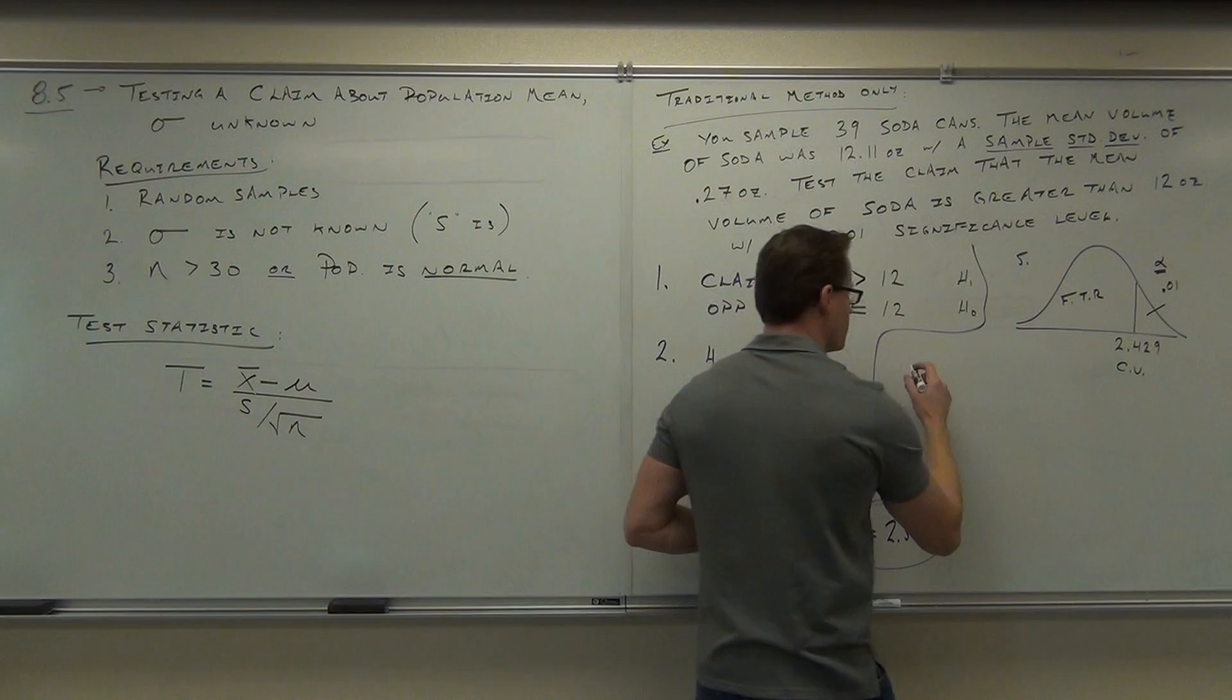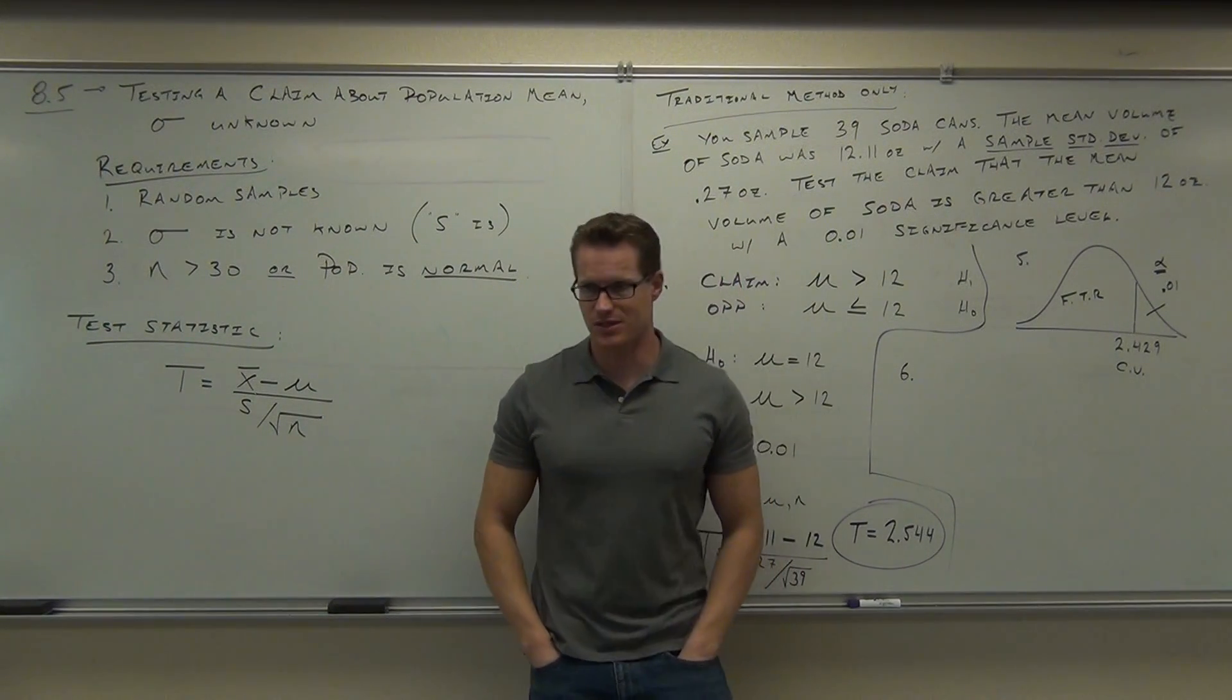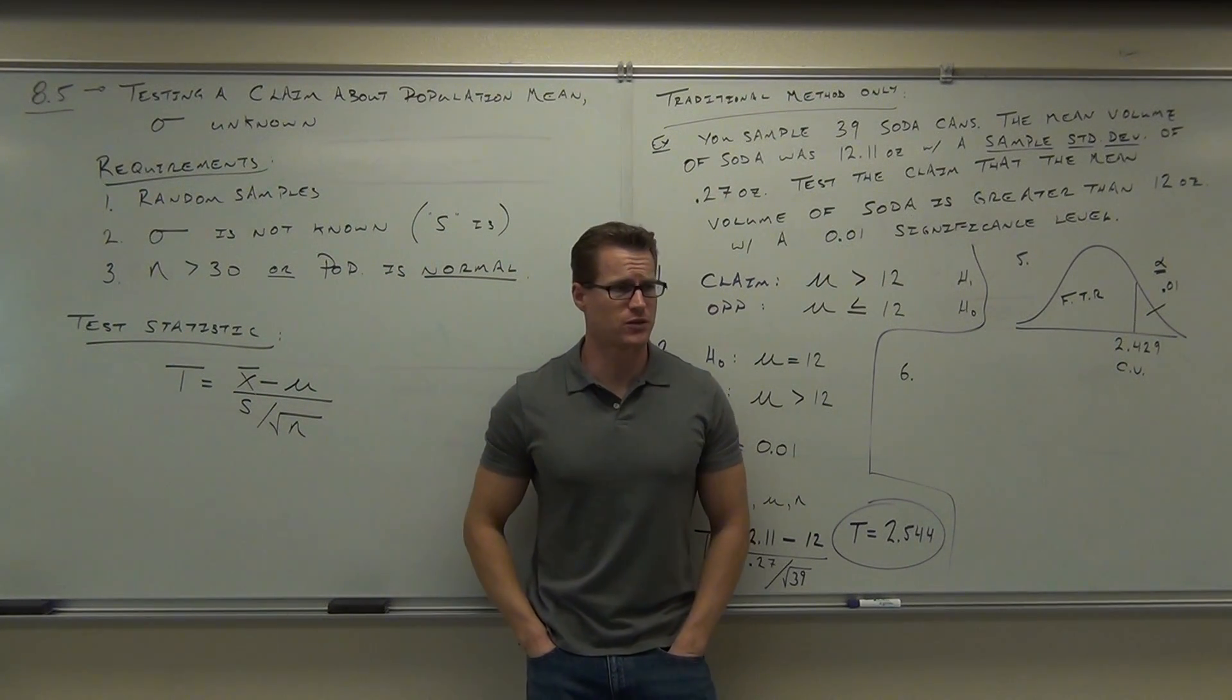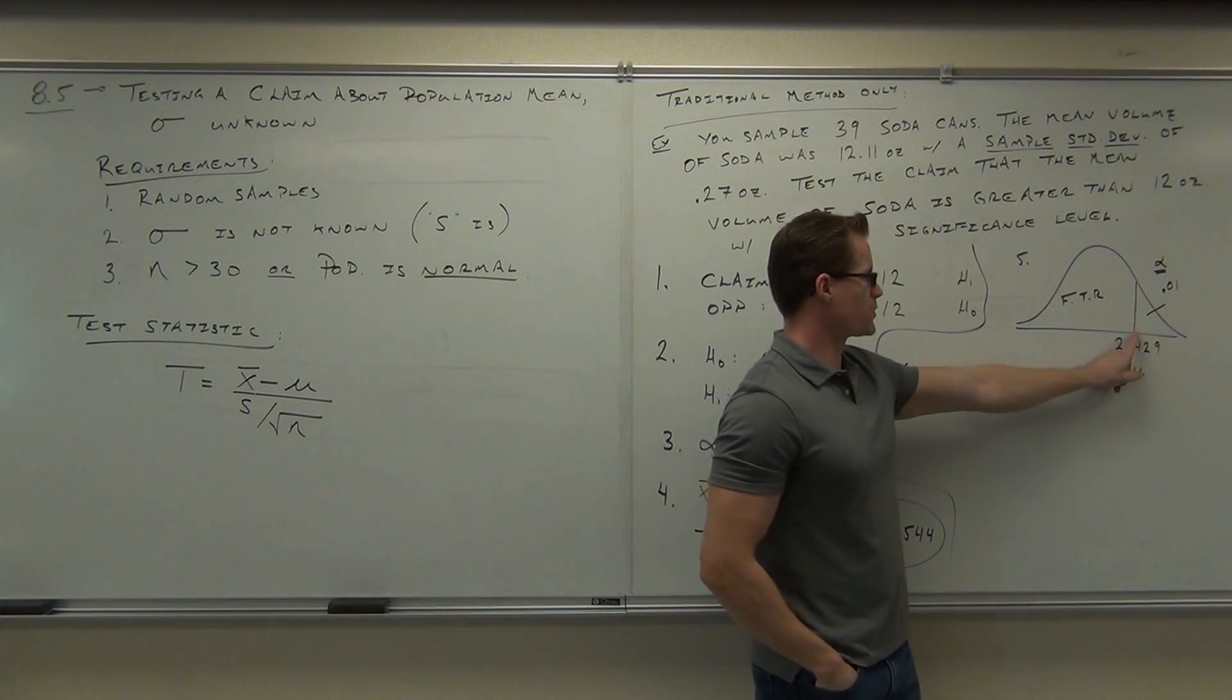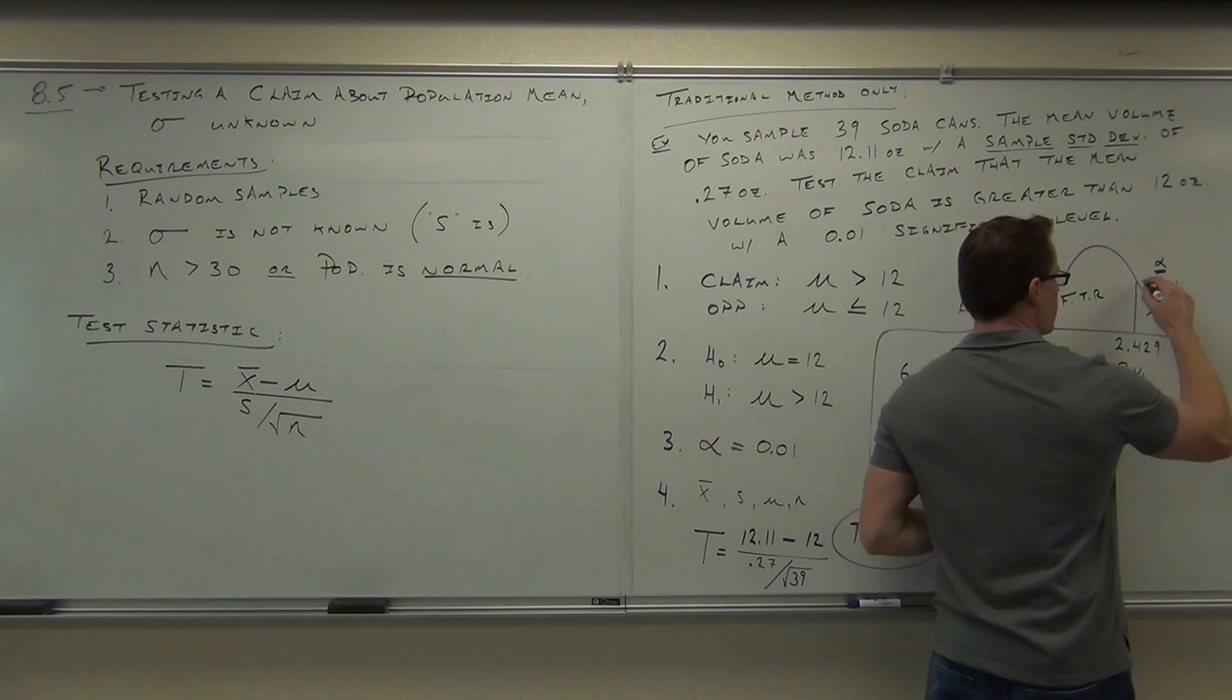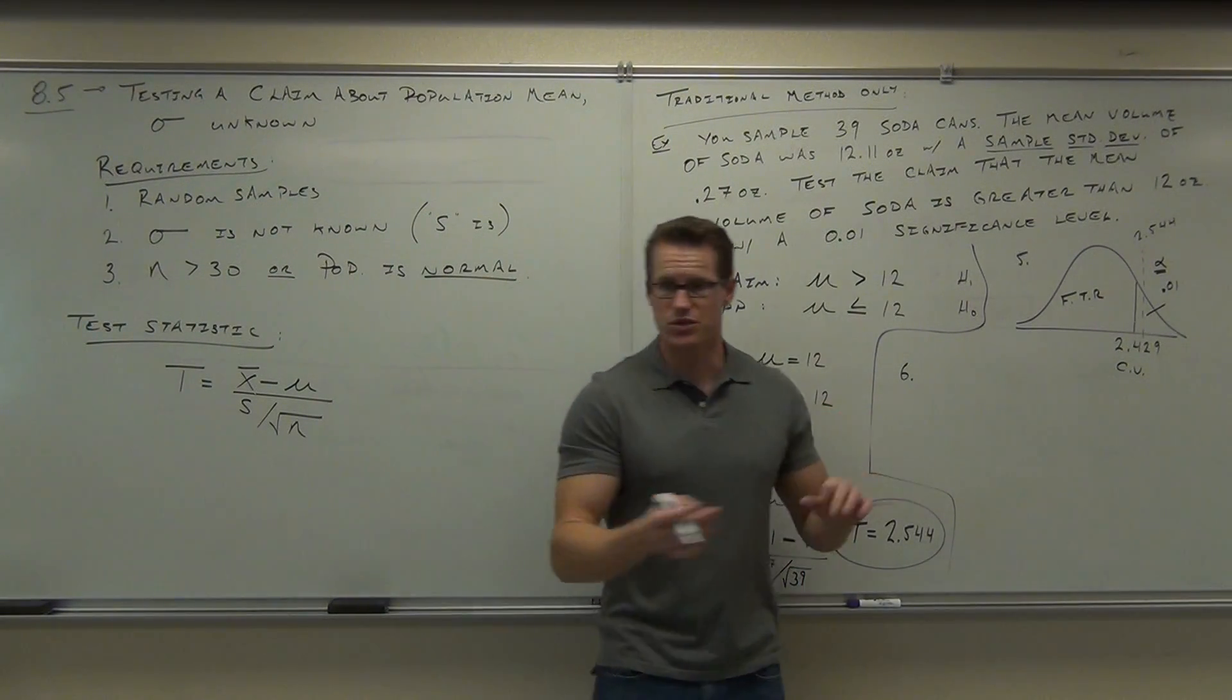Now is our decision time. Decision time says, okay, now you're going to look at that, and you're going to actually test your test statistic. This is where you put this on the chart. Where does our test statistic fall? Does it fall in the fail-to-reject region or the reject region? Which one? Clearly reject region. It's 2.54. Here's 2.4. It's just slightly over there, but it is in the rejection region, saying, okay, well, if we fall over here, am I going to reject H sub 0 or fail to reject H sub 0? We're in the rejection region, so we're going to reject.